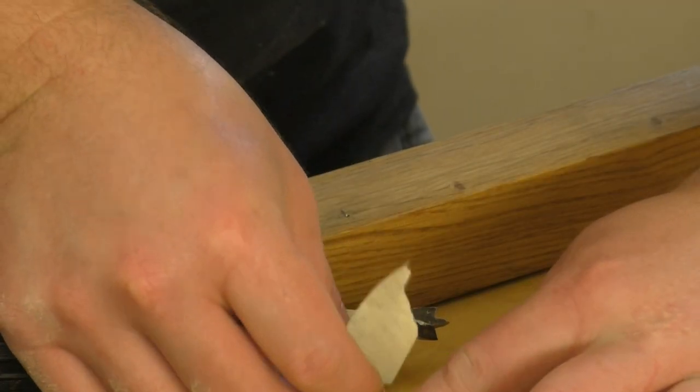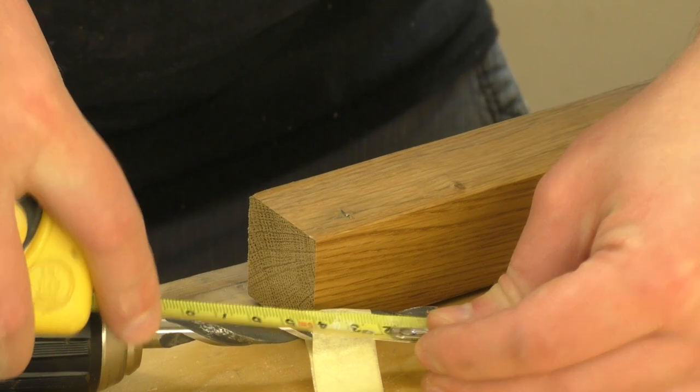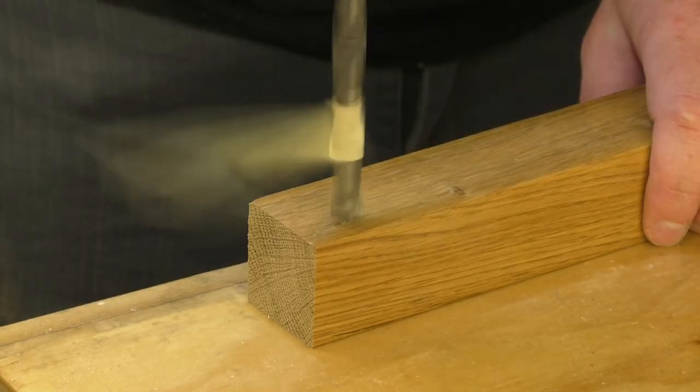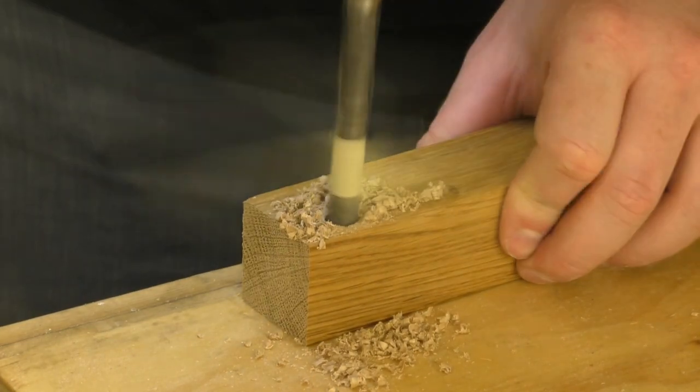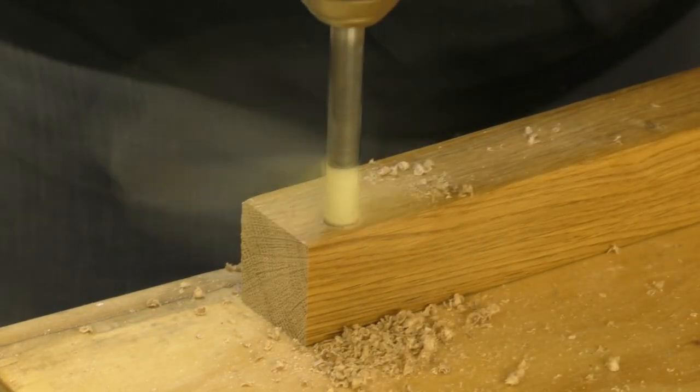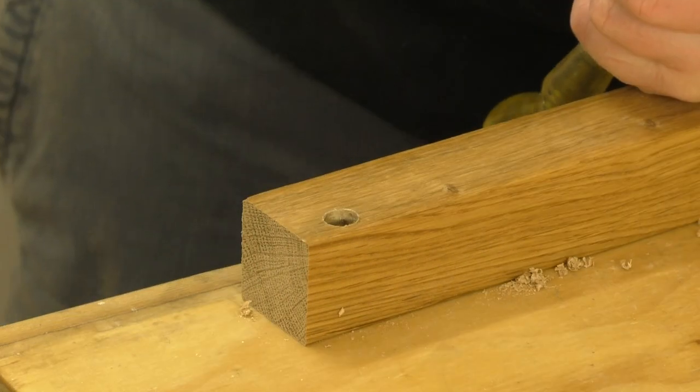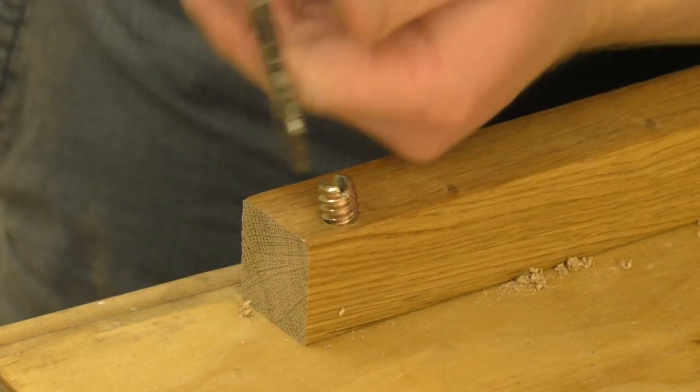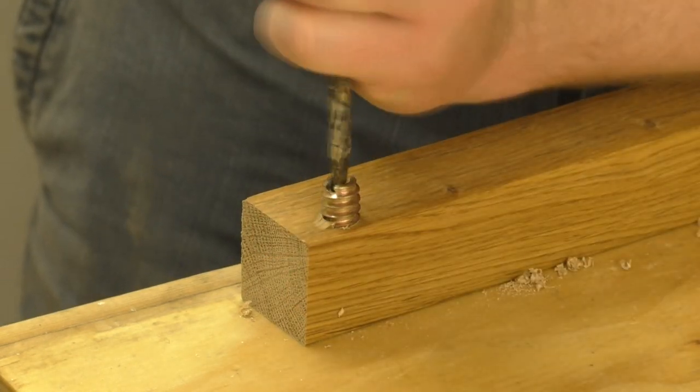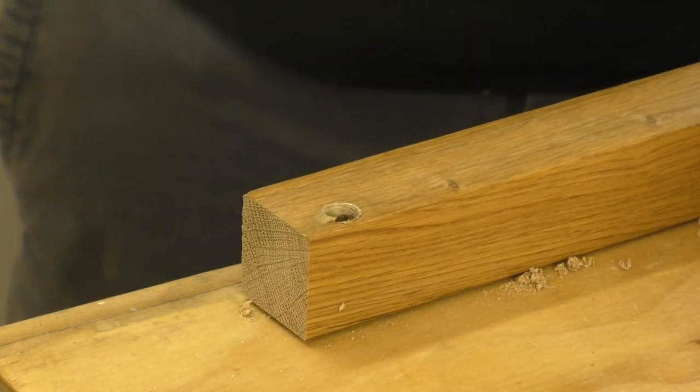I'm going to wrap a piece of tape around the drill bit so that I can drill the hole to the right depth. And now I can try and insert one of these threaded inserts. And that's not going to go in.